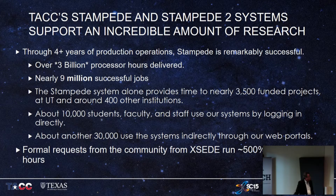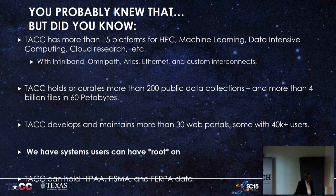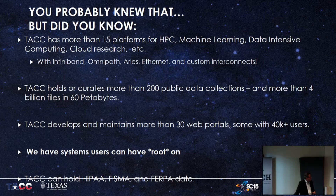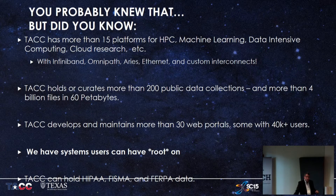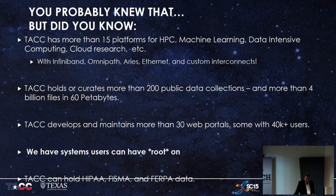We rolled 14,000 accounts onto Stampede 2 on day one from Stampede, and we're still oversubscribed seven to one in the last quarter. TACC now has lots of different platforms and interconnects — InfiniBand systems, OmniPath systems, Aries-connected Cray systems, Ethernet-connected systems, and some other setups including direct-connected PCI and Microsoft FPGA interconnects. We have at least five different interconnects across our platforms.